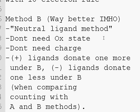On the other hand, you can use method B which is way easier to use because you don't need to know the oxidation state. You don't need to know the charge on the ligands, and basically you can do it quicker.